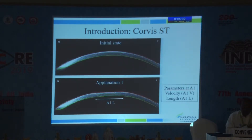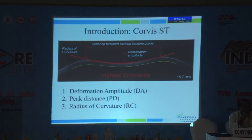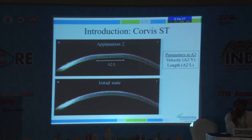As the cornea moves inward, we get the first aplanation point, where we can calculate the velocity of the cornea and the length of the aplanated area. It then continues to move inward and becomes concave. At peak concavity, there are three parameters: the deformation amplitude — the total distance moved by the corneal apex from start to highest concavity in millimeters — the peak distance between the two corneal bending points, and the radius of curvature, as shown in the figure. The cornea then resumes its original convex position and passes through a second aplanation phase where velocity and length are again calculated.